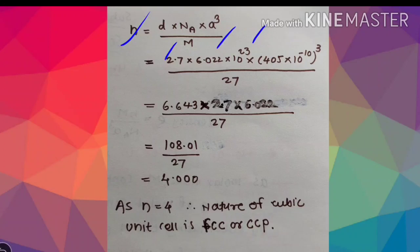After calculations, finally we get n = 4. Since n = 4, this means 4 particles per unit cell. Therefore, the nature of cubic unit cell is FCC or CCP. This is how we can solve such problems.